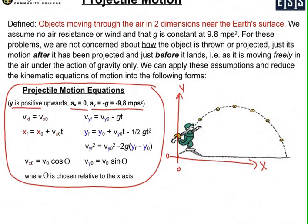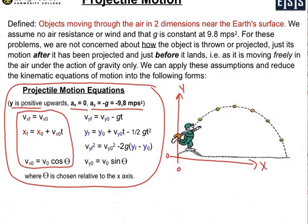The x direction reduces to just three equations. Because there is no acceleration in the horizontal direction, your initial velocity and your final velocity are the same. Whatever the x component is in the horizontal direction never changes — it stays constant because we're assuming there's no air resistance or wind affecting that velocity. Your velocity stays the same and how far you travel is really just dependent on your initial velocity and the time.